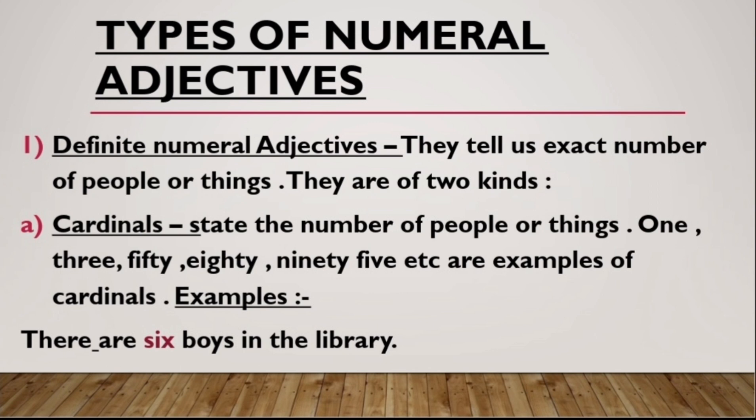Let's talk about definite numeral adjectives. They tell us the exact number of people or things. A definite numeral adjective is divided into two parts: cardinals and ordinals. Let's talk about cardinals first. Cardinals state the number of people or things.